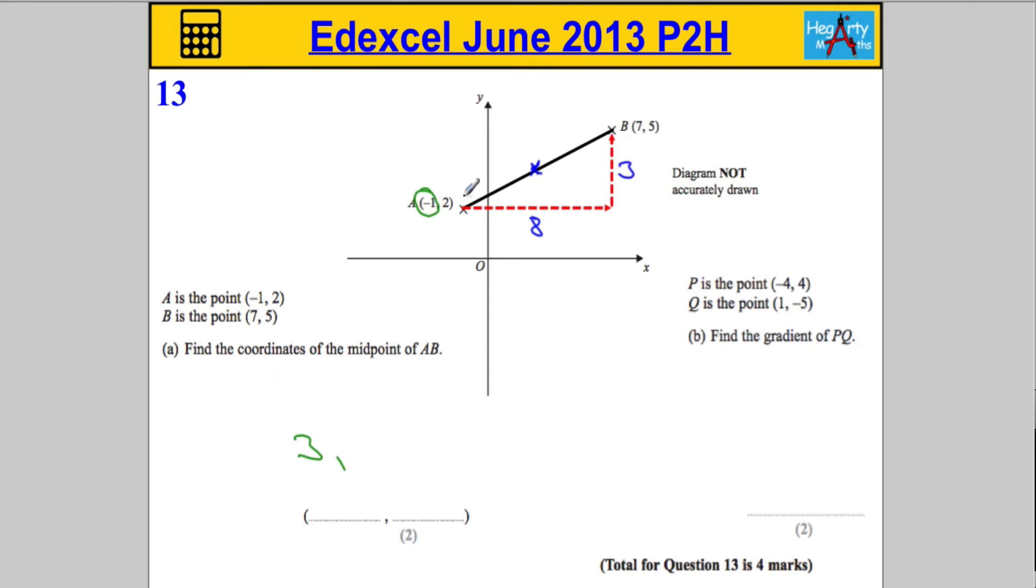And similarly, if we went up 3 units, it must have travelled up 1 and a half units to get to the midpoint. Which means that the new y-coordinate must be 3.5.